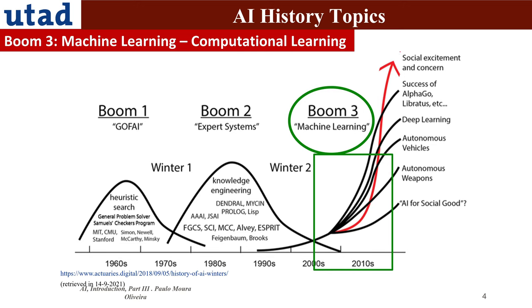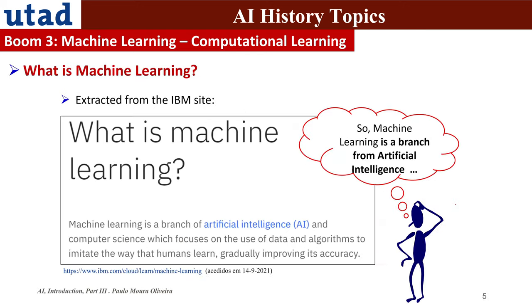Now we have these keywords: deep learning and so on, and artificial intelligence for social good. So what is machine learning? I extracted this quote from the IBM site. It states that machine learning is a branch of artificial intelligence and computer science, which focuses on the use of data and algorithms to imitate the way that humans learn, gradually improving its accuracy.